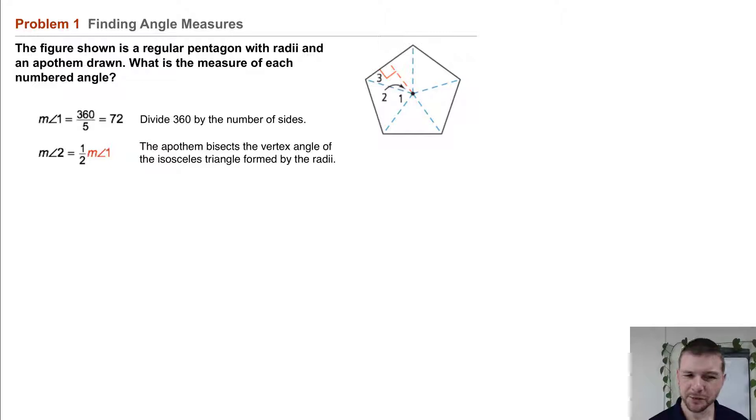The measure of angle 2 is half of the measure of angle 1. That's because the apothem bisects the vertex angle of the isosceles triangle formed by the radii. One half of 72 is 36.